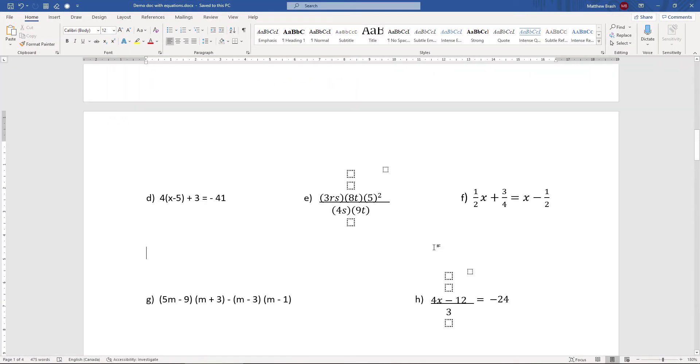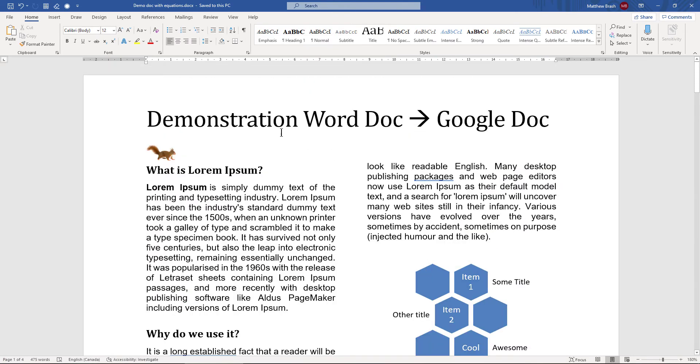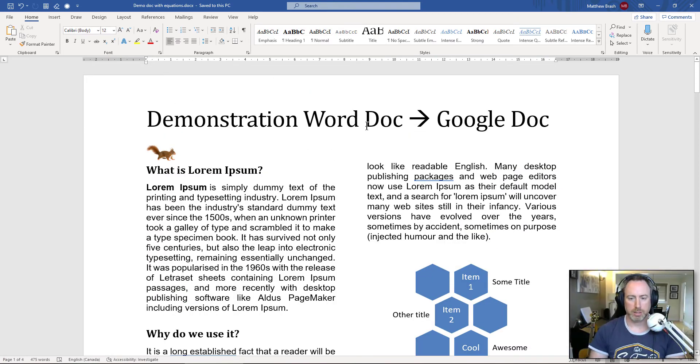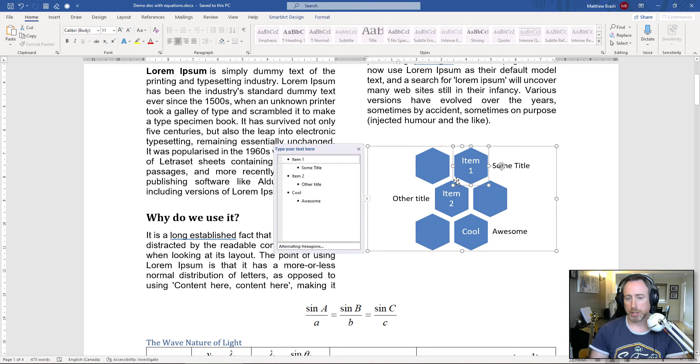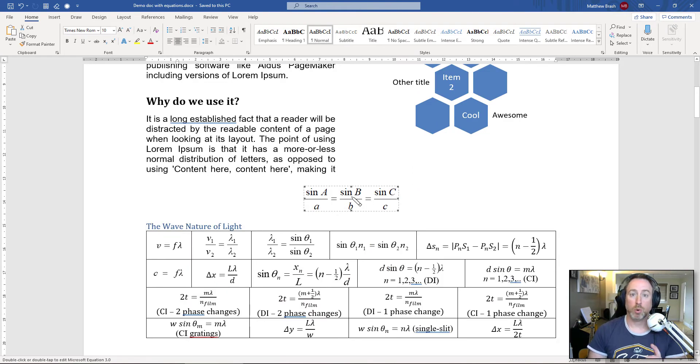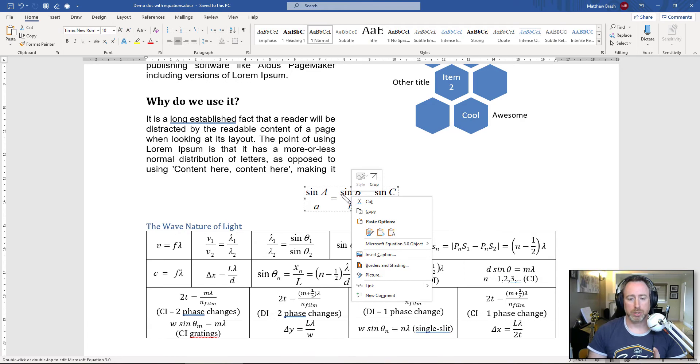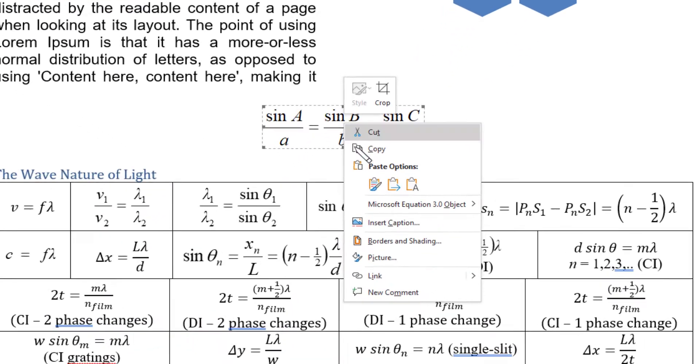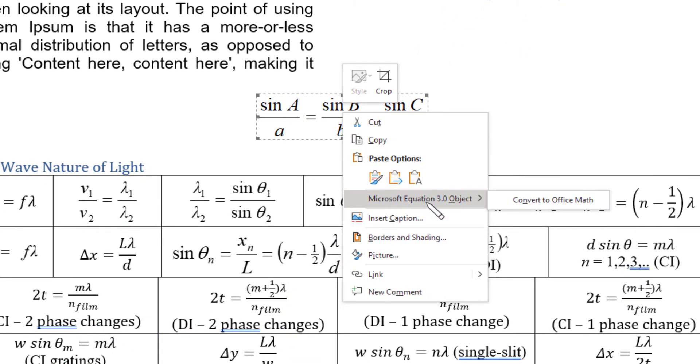Let's take a look in the word document. How can we make our life easier before we go to convert it? These equations are in an older version of the equation editor. And what you can actually do is you can convert them. If you see here, I right clicked on it. It says Microsoft equation 3.0 object and then it says convert to office math. So I can do that.